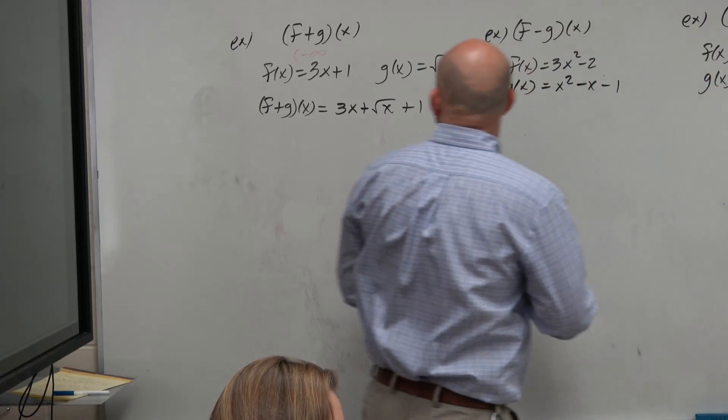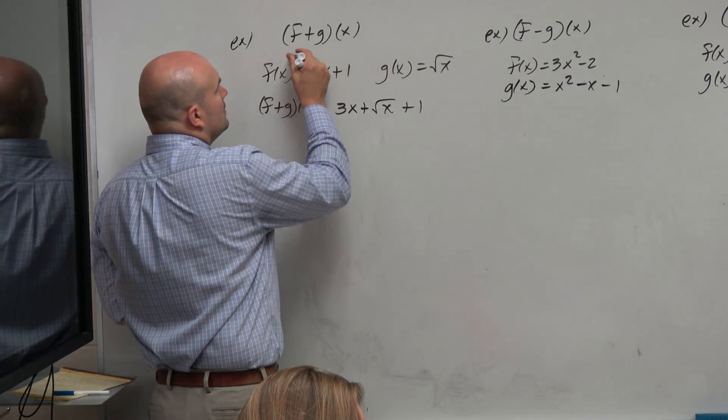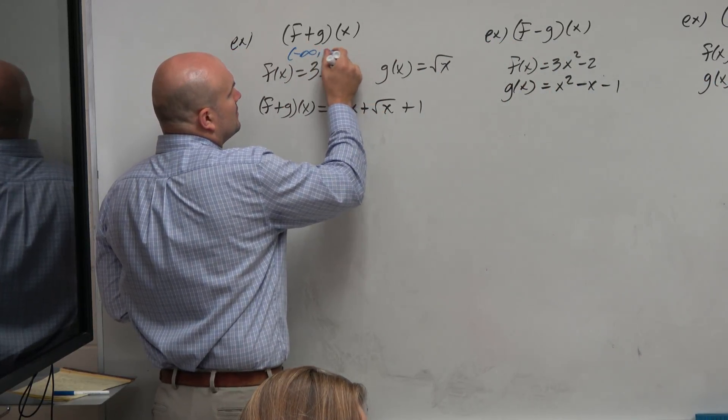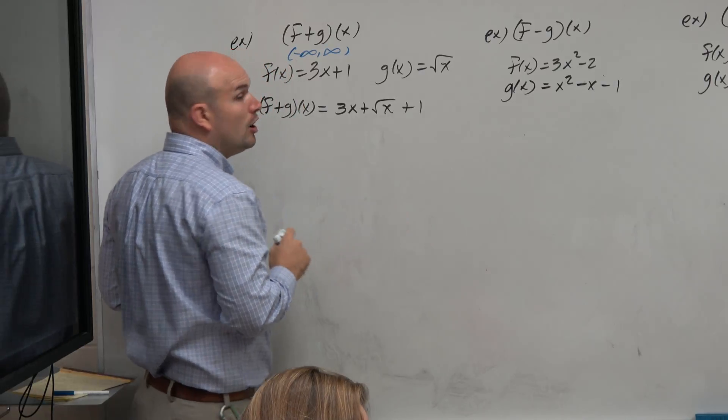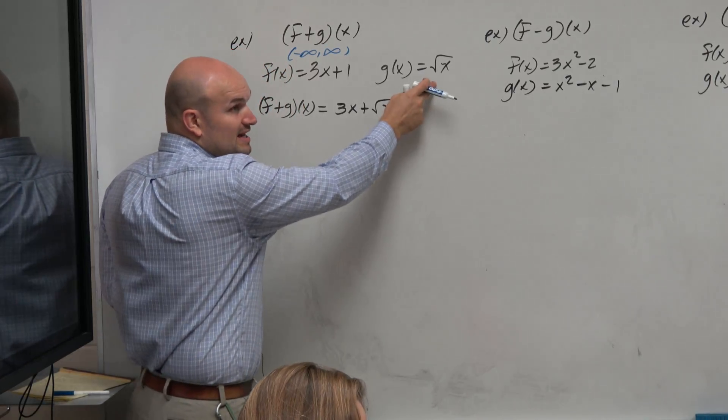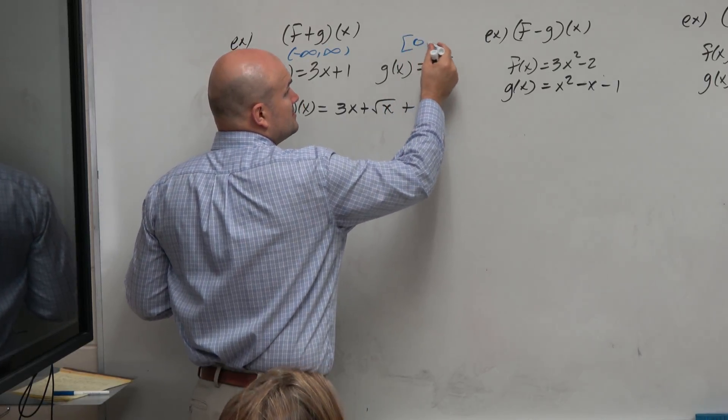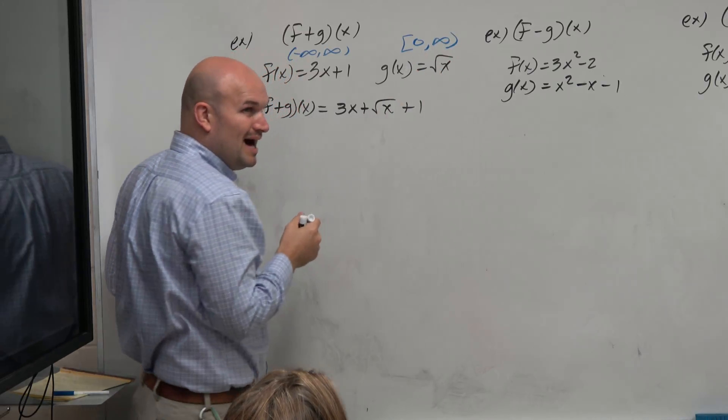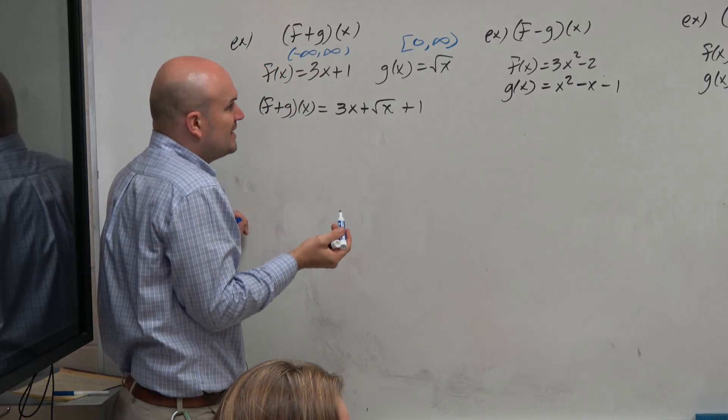Didn't mean to hit you. So here, the domain is actually all real numbers, right? This, here the domain is 0 to infinity. All positive numbers, right? Because you can't take the square root of a negative number.